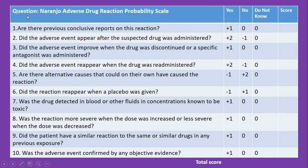These are the 10 items present under the Naranjo Adverse Drug Reaction Probability Scale. The first question is: are there previous conclusive reports on this reaction? If yes, you put plus 1. If no or do not know, the score is 0.